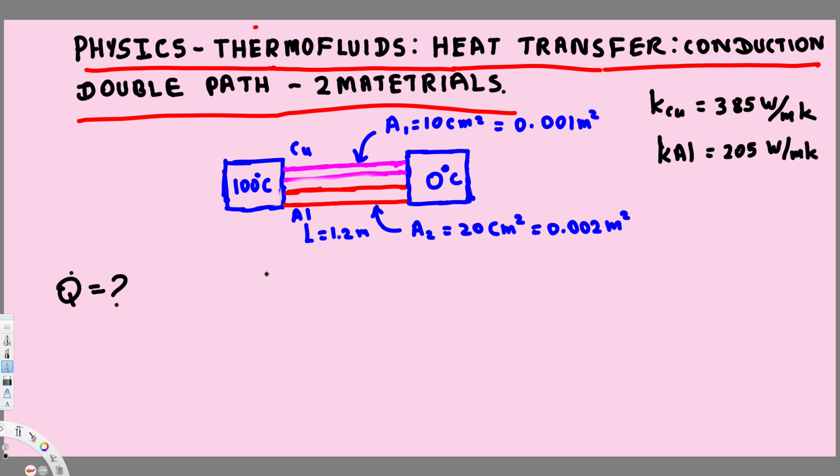The generic equation for Q dot is this one. This is the main equation we're going to derive the new equation from: k A delta T over L. Now let's see what's going to happen when we have two different materials and two different areas.